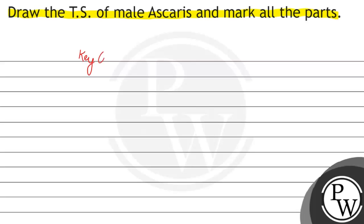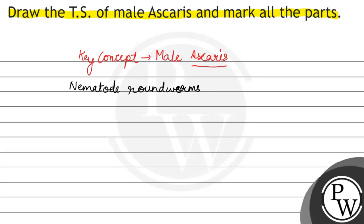आज हमारा concept है Male Ascaris. पहले हम समझते हैं कि Ascaris होते हैं क्या? Ascaris होते हैं Nematode roundworms. And ये होते हैं parasitic in nature.